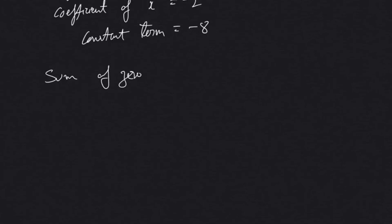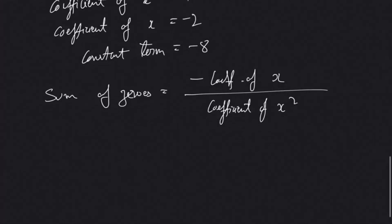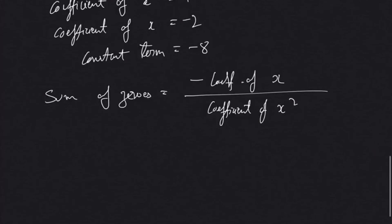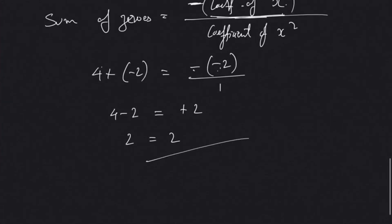Verifying the sum of zeros: sum = -(coefficient of x) / (coefficient of x²). Our zeros are 4 and -2, so 4 + (-2) = 2. The right-hand side: -(-2) / 1 = 2. Both sides equal 2, so the first relationship — sum of zeros — is verified.